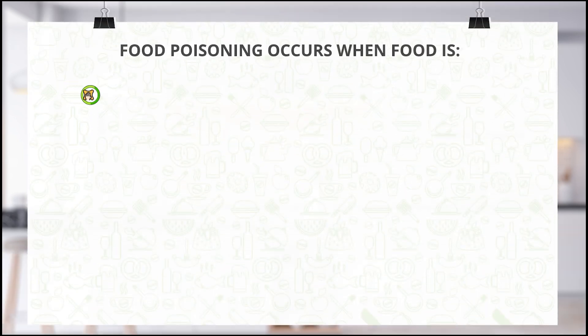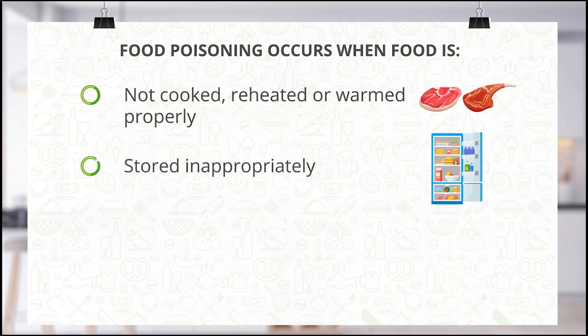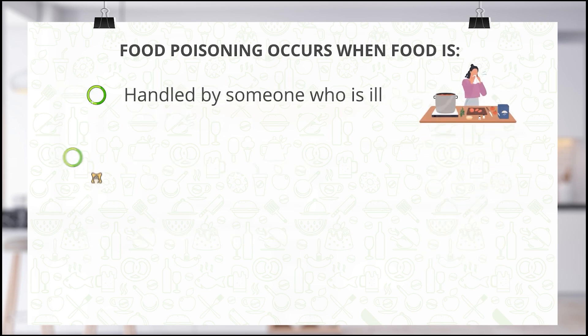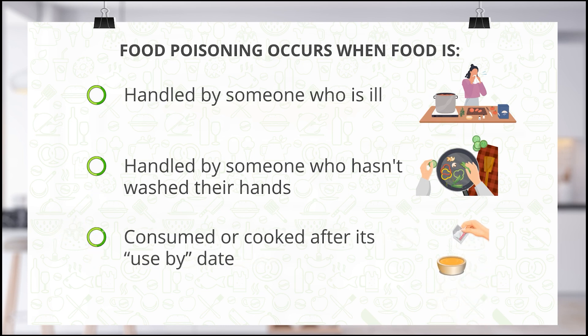If you've ever been through food poisoning, then you know how it feels, and we think you don't want anyone else to go through that as well. Food poisoning occurs when food is not cooked, reheated, or warmed properly; stored inappropriately; left out for too long; handled by someone who is ill; or handled by someone who hasn't washed their hands.